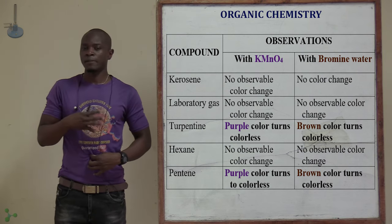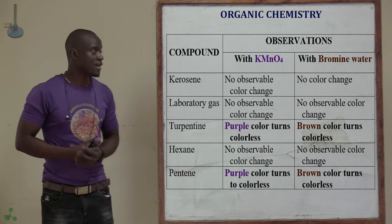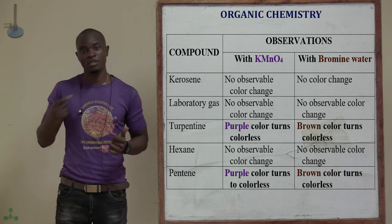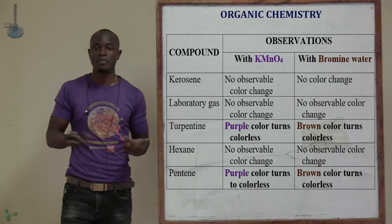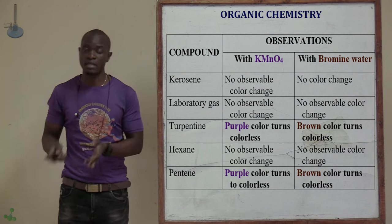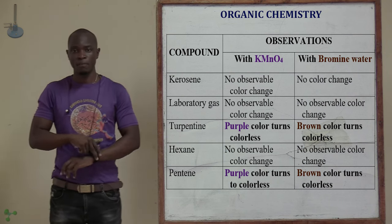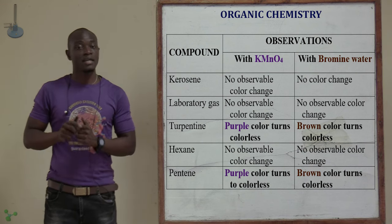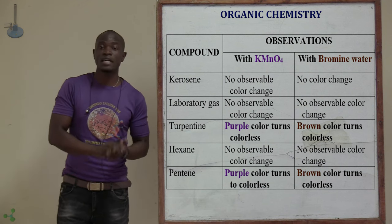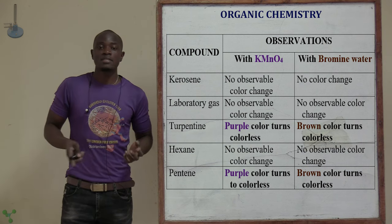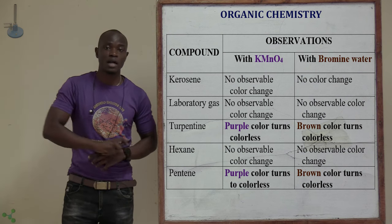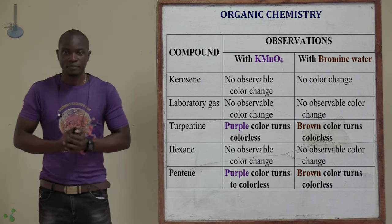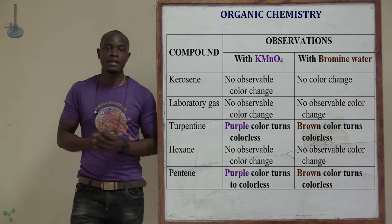That is the summary of saturated and unsaturated hydrocarbons. In an exam, if you are asked to identify which hydrocarbons are saturated or unsaturated using potassium permanganate, look at the family: if it is an alkene or alkyne it is unsaturated and will discolorize; if it is an alkane it is saturated and there will be no discolorization. The conclusion of this experiment is that kerosene, laboratory gas, and hexane are saturated hydrocarbons because they did not discolorize these chemicals. Turpentine and pentene are unsaturated hydrocarbons because they were able to discolorize potassium permanganate and bromine water. Thank you very much.